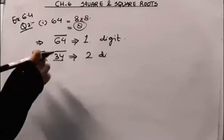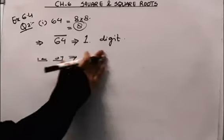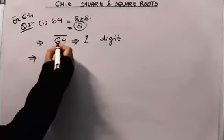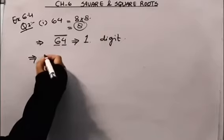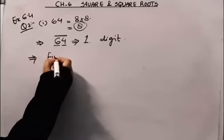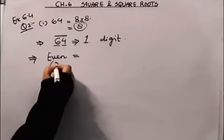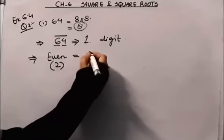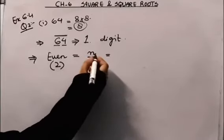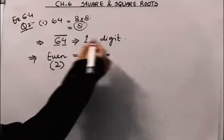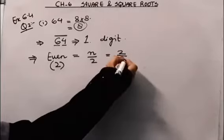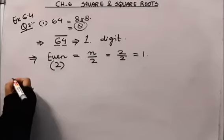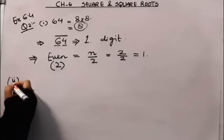There is one more way to find the number of digits in the square root. If the number of digits n is even, the number of digits in the square root is n/2. For 64, n is 2 (even), so 2/2 = 1. The square root has one digit.